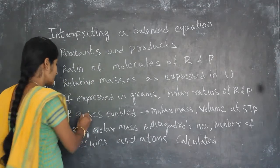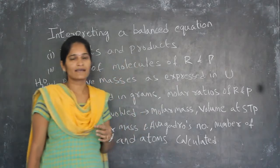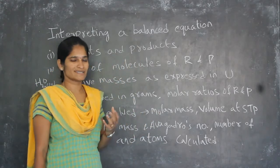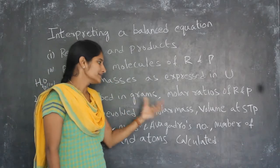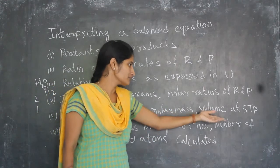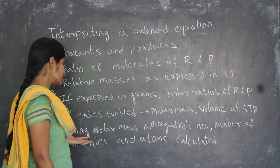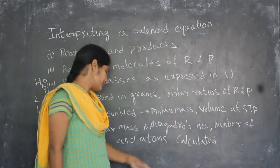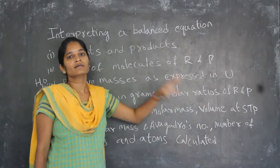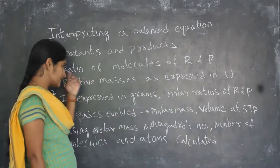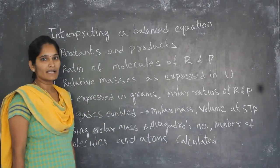Next, if gases are evolved, gases do not have a specific volume, so I will convert the volume into mass. Then I can find molar mass and volume at standard temperature and pressure. Using molar mass and Avogadro's number, I can find out the number of molecules and atoms calculated in the molecules — that means the number of atoms in a chemical formula.